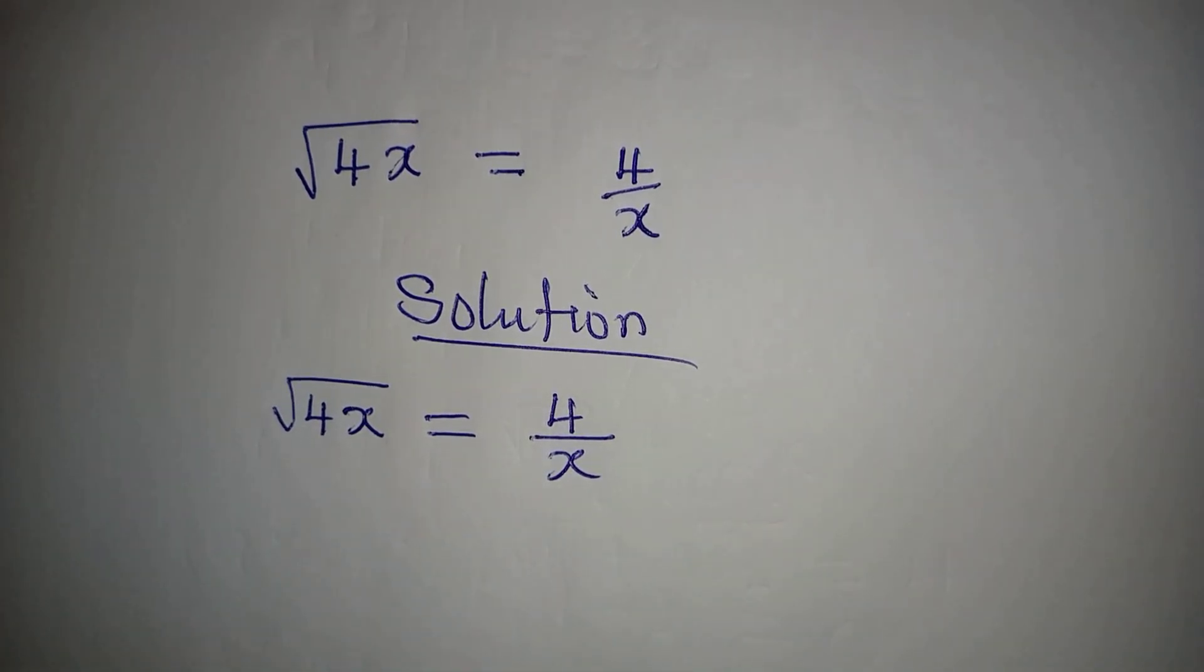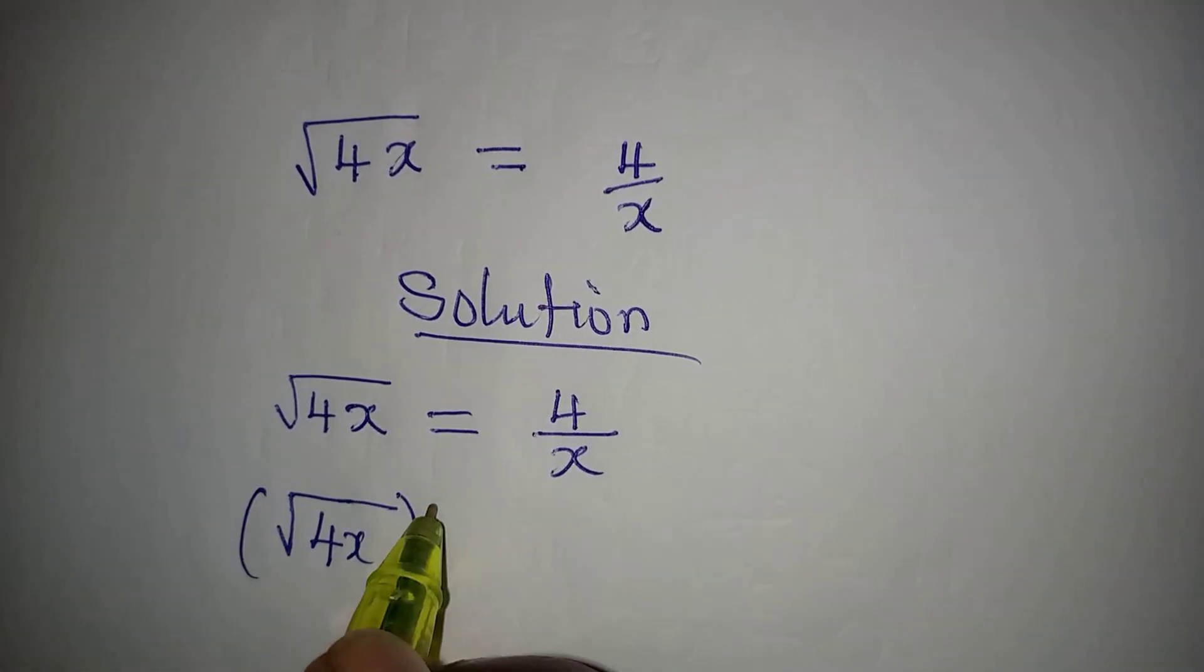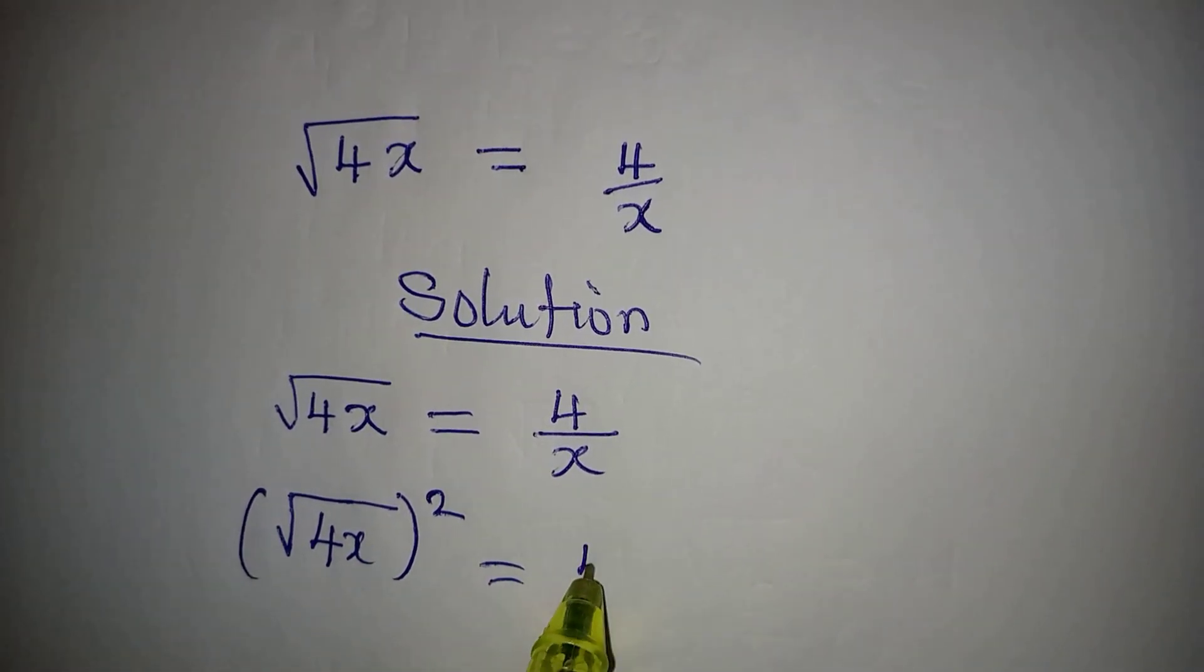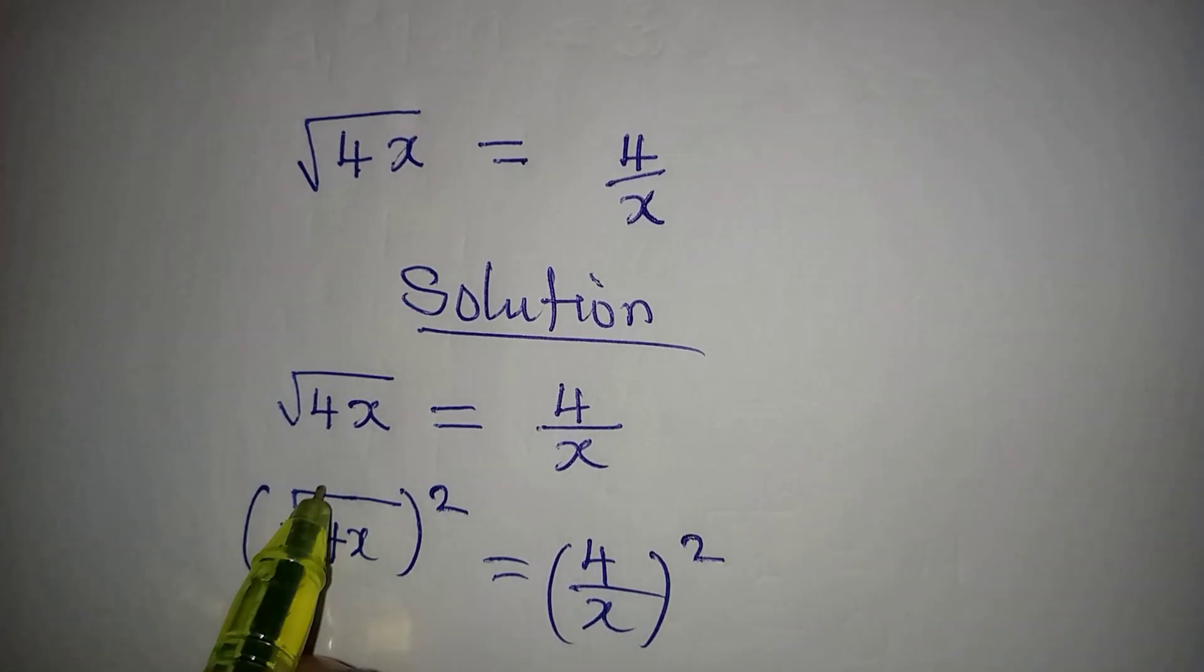How do I deal with this? To remove the square root from here, we square both sides. So we have square root of 4x squared equals 4 over x squared. This will go with this.